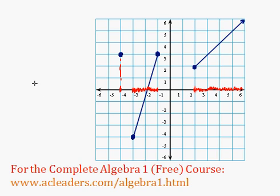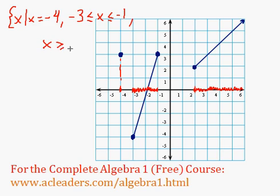So how can we write this crazy domain? Well, x such that x is going to be equal to negative 4, it's going to be between negative 3 and negative 1, including both those values. Then it will be greater than 2, or equal to 2, rather. Greater or equal to 2, because it includes that point.